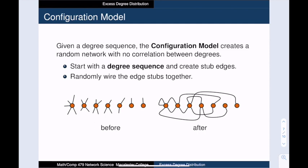The probability that a given stub leads to a vertex of degree k does not depend upon the degree of the source of the stub.